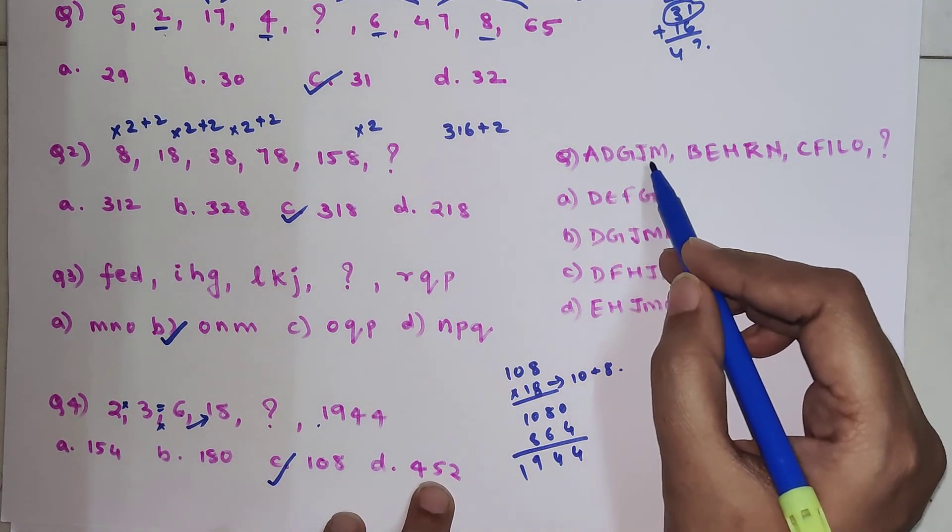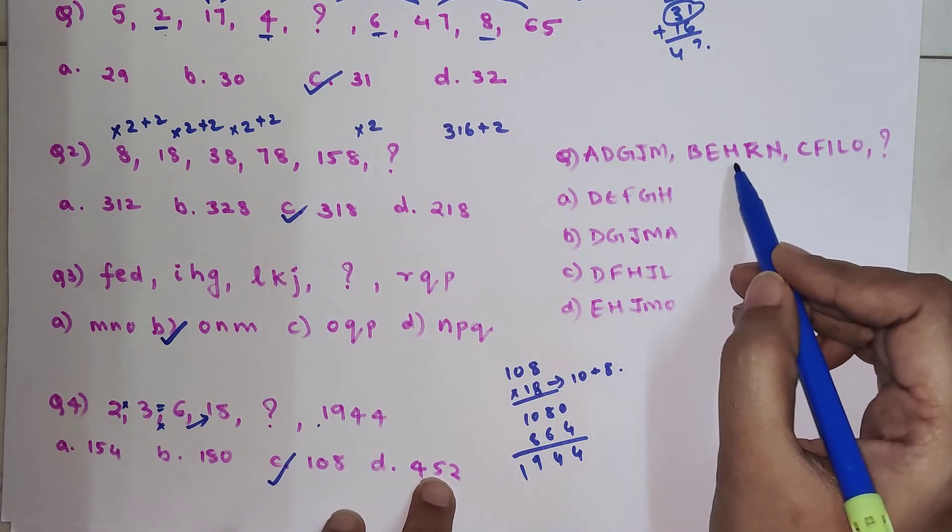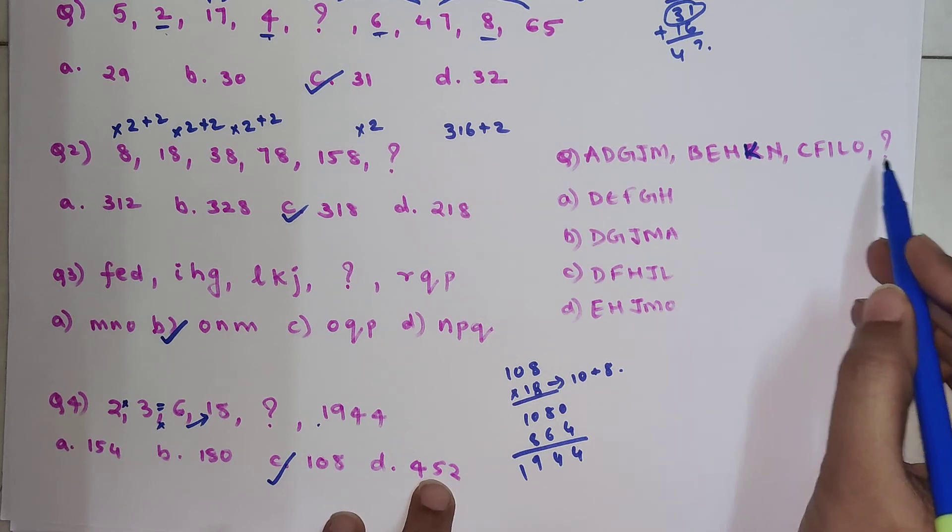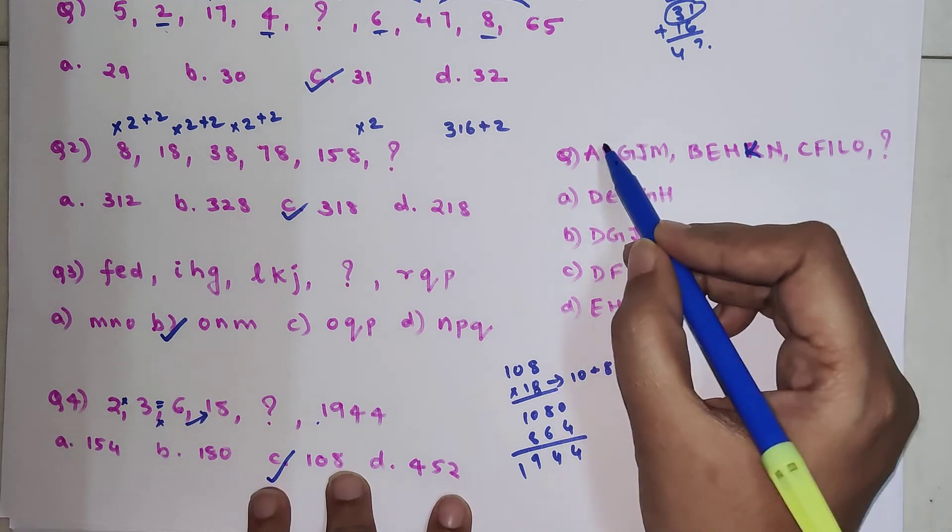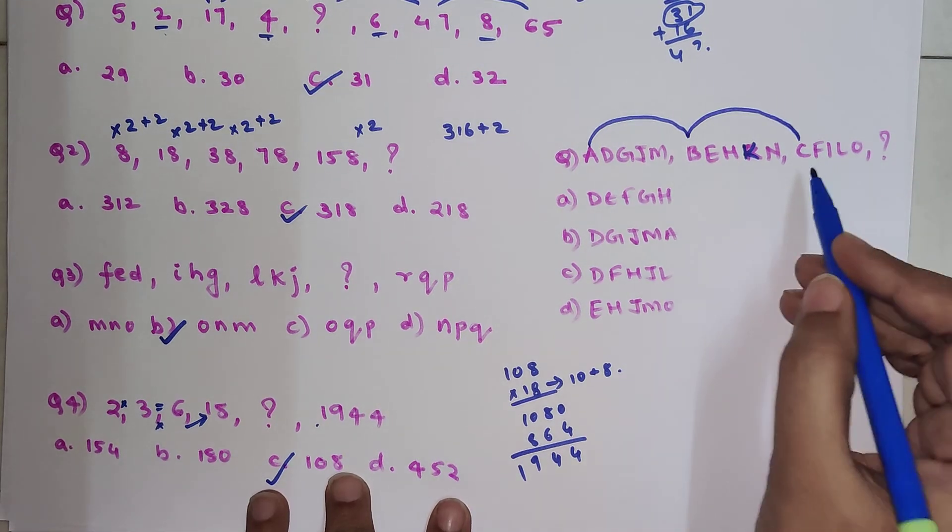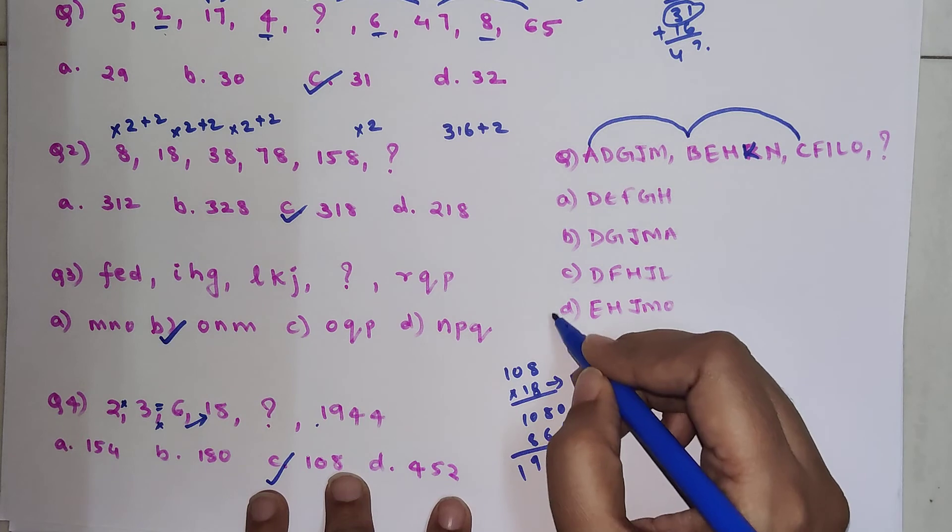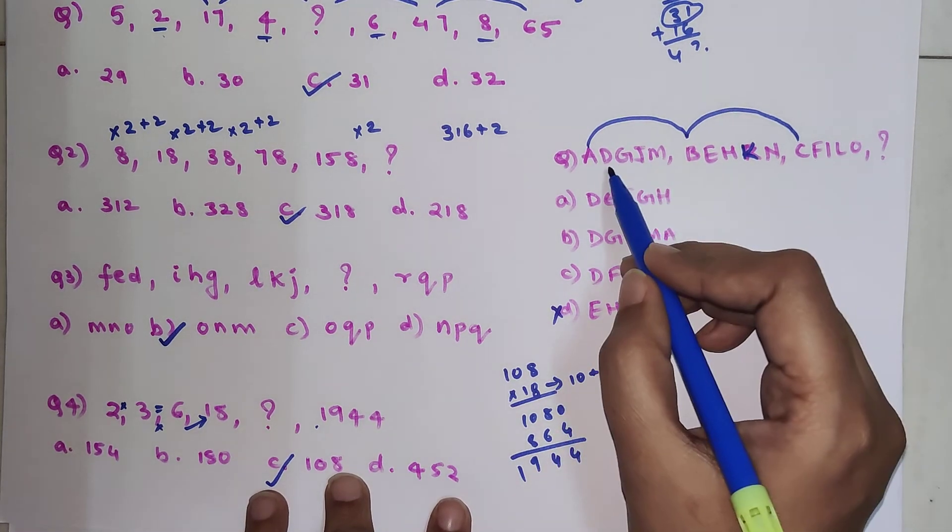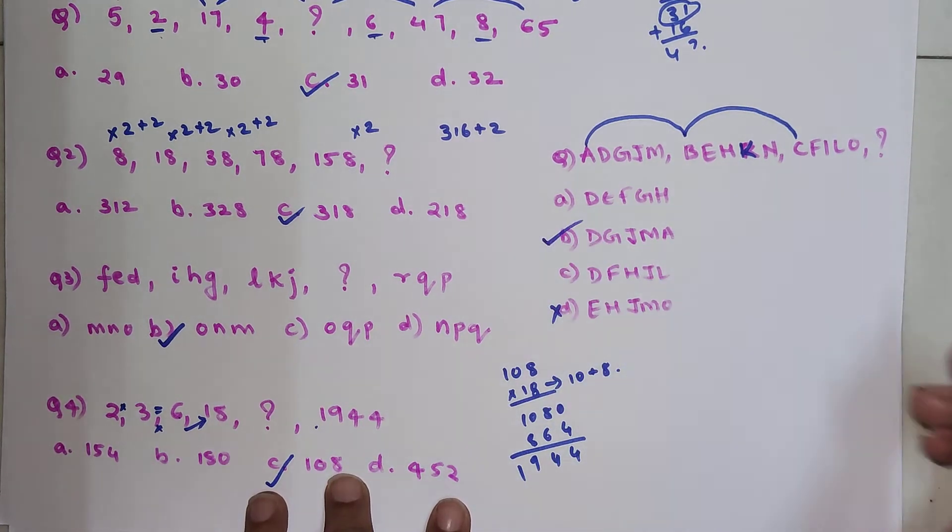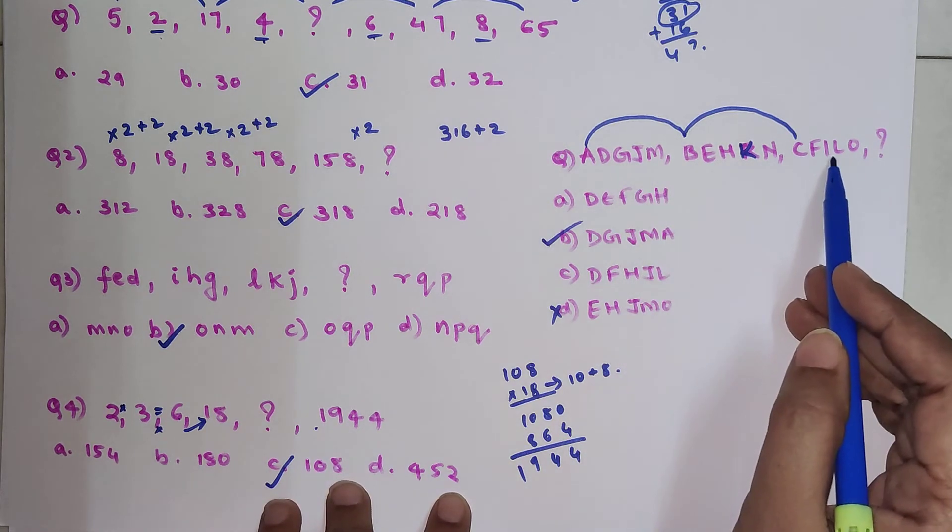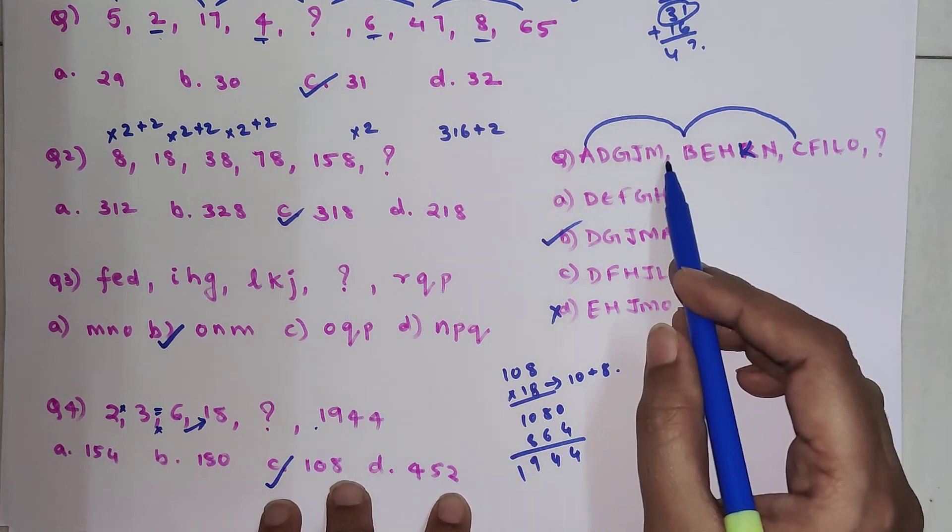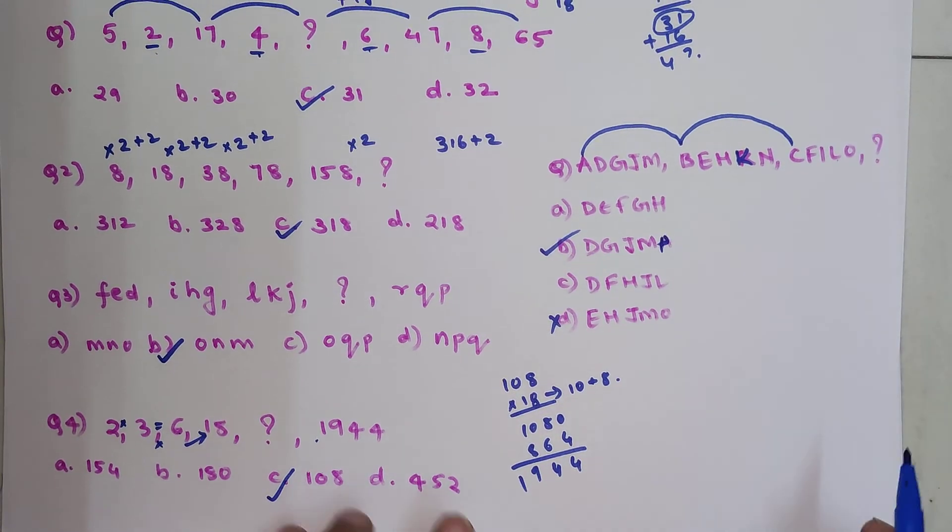Now we have A, D, G, J, M, then B, E, H, K, N, and this is C, F, I, L, O. If you look closely, what is the alphabet which comes after A? B. What is the alphabet which comes after B? C. So your answer should have the first element as D. This option D is cancelled. Then D is followed by E, then F. What does F come after? G. So I can say directly this is my answer, which is, if you look closely, G ke baad H, H ke baad I, then J. J ke baad K, K then L, and L ke baad we have M. And then M, N, O, P. This is P.